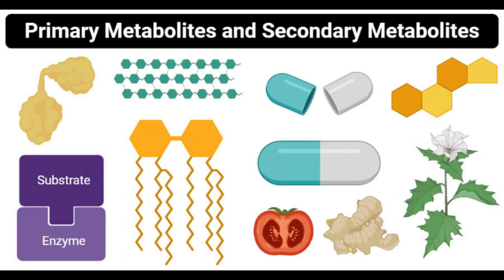Primary metabolites are divided into two groups: primary essential metabolites and primary metabolic end products. Primary essential metabolites include compounds like proteins and carbohydrates that make up the structural and physiological organization of the organism. In contrast, primary metabolic end products include products like lactic acid and ethanol that are the end products of various metabolic pathways.